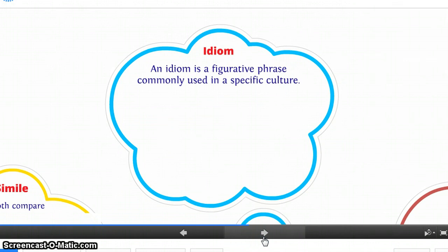An idiom is a figurative phrase commonly used in a specific culture. So it's going to be figurative, meaning the words cannot be taken in their literal meaning. But what's important about an idiom is that it's specific to a culture. So I want to give you an example from our culture, and then I'll give you an example from other cultures so you can see how it's different from a regular figurative phrase.